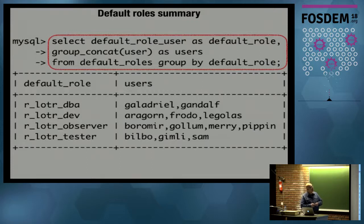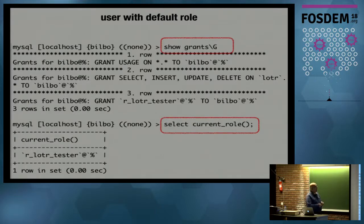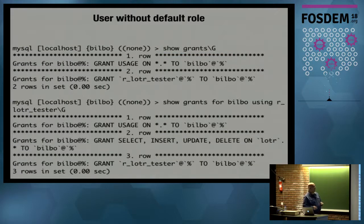You can use those tables with regular SQL to see how many DBAs, developers, observers, and testers you have. When you have a user with a default role, SHOW GRANTS displays the privileges explicitly — you see SELECT, INSERT, UPDATE, DELETE. When you say SELECT CURRENT_ROLE() you get the name of the role. If you don't have a default role, SHOW GRANTS gives you only the name of the role, not the privileges.